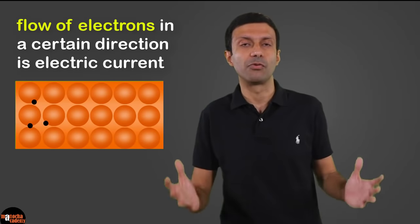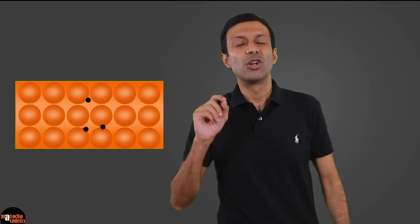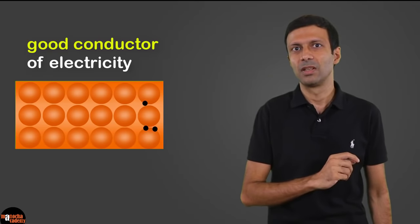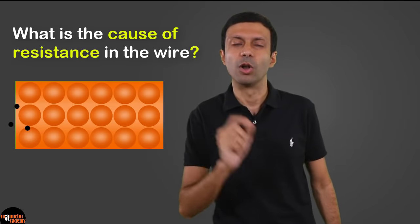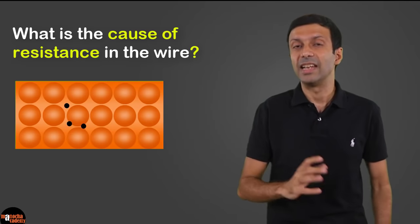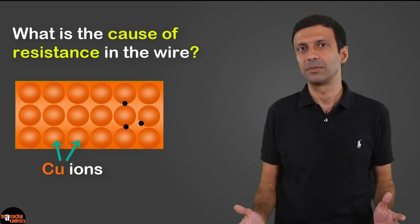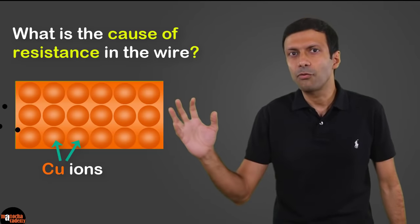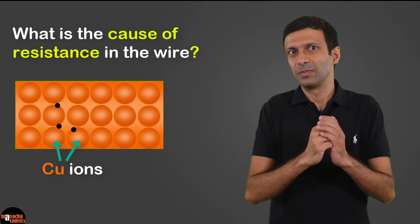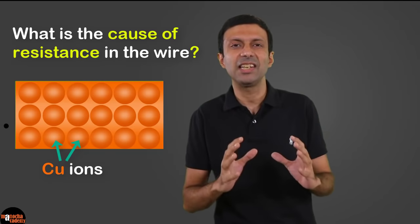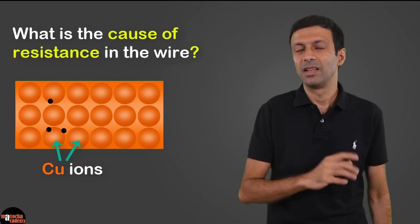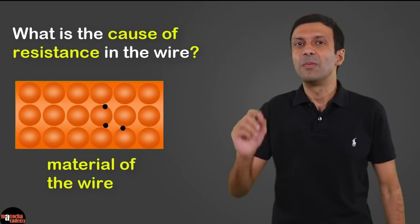The wire contains two things: a very large number of free electrons and copper ions. When voltage is applied across the wire, the free electrons move in a specific direction, and this flow of electrons is called electric current. The wire has a huge number of free electrons — that's why it's a good conductor. But the wire is solid and contains a huge number of copper ions. When free electrons flow through the wire, they collide against the copper ions, which resist the flow of electrons — that's the cause of resistance.